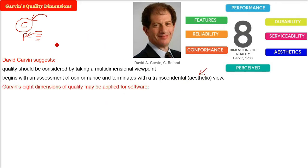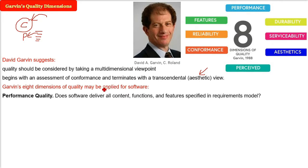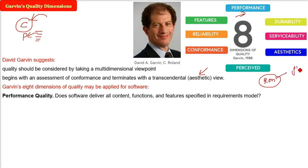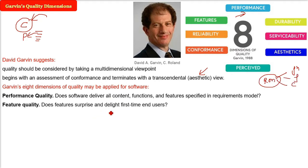Garvin's eighth dimension of quality, how it can be applied to software — the first is performance quality. That is, does this software provide everything like content, function, and features? But from where? From the requirement model, from the software requirement specification, what has been agreed upon by the developer, the stakeholder, and the user — has it been fulfilled?